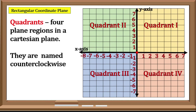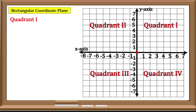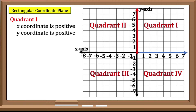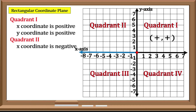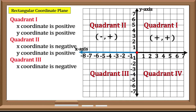In the 1st Quadrant, the X-coordinate is positive and the Y-coordinate is also positive. Moving in the counter-clockwise direction to the 2nd Quadrant, the X-coordinate has a negative value and the Y-coordinate has a positive value. In the 3rd Quadrant, the X-coordinate has a negative value and the Y-coordinate also has a negative value.